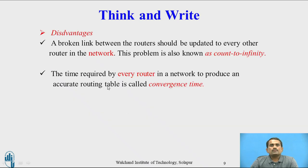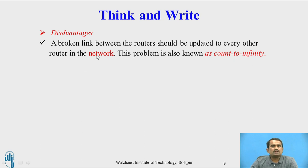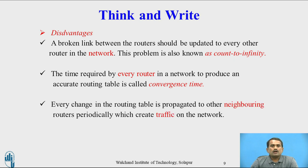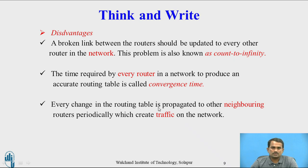Now the disadvantages. First, a broken link between routers must be updated to every other router in the network — this problem is known as count to infinity. The time required by every router to produce an accurate routing table is called convergence time. Also, every change in the routing table is propagated to neighboring routers periodically, which creates traffic on the network. In a routing algorithm, convergence time and count to infinity are key terms under disadvantages.